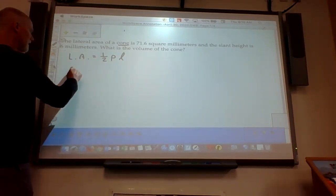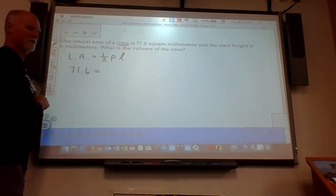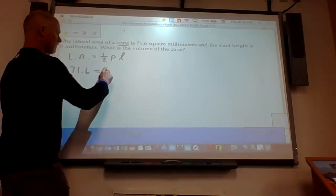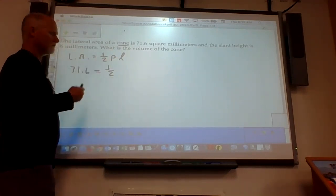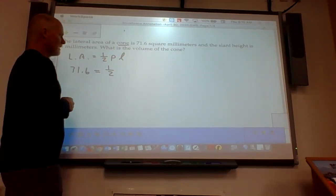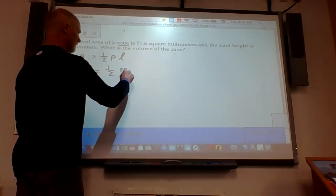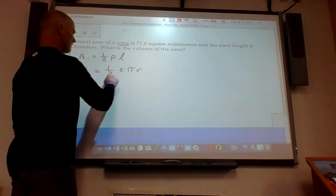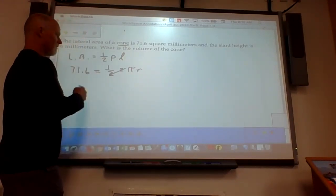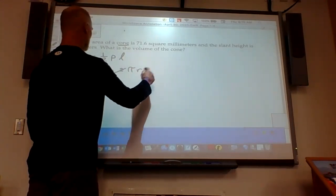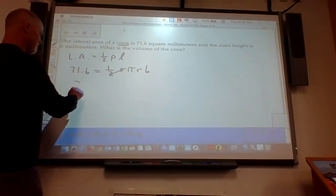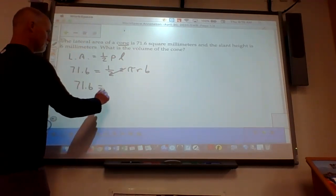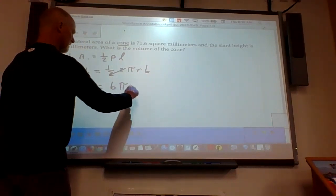So first of all, we're going to have 71.6 for the lateral area. And then we're going to fill in one-half, and then the perimeter of a circle or the base of a cone is 2 pi r. So when we write 2 pi r, the 2s cancel. So we don't have the one-half. We get rid of the 2. We have just pi r times the slant height. The slant height, they say, is 6. So we have 71.6 equals 6 pi r.